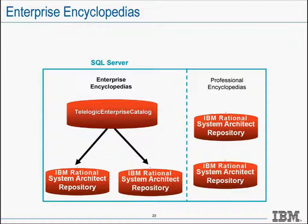In a System Architect XT deployment, System Architect, System Architect XT, and System Architect Process Integrator clients may require different access privileges — that's why you need this granular enterprise access role permission. For example, a System Architect XT client may only need read-only access, while a System Architect Process Integrator client requires access to only business model diagrams, and System Architect requires full client access. You can only provide this granular role or object access using an enterprise encyclopedia, not a professional encyclopedia.